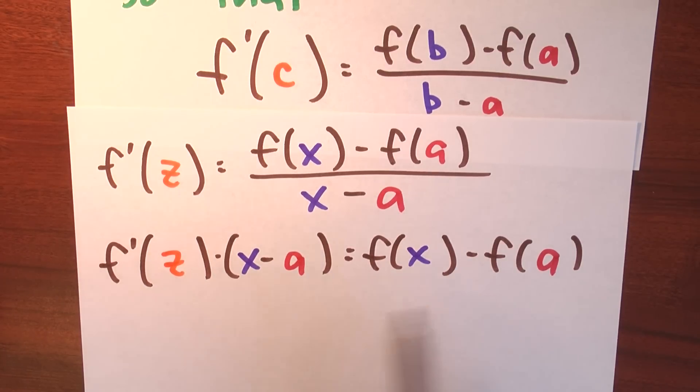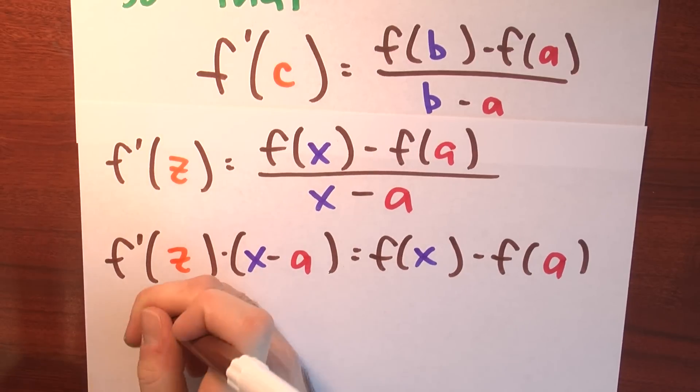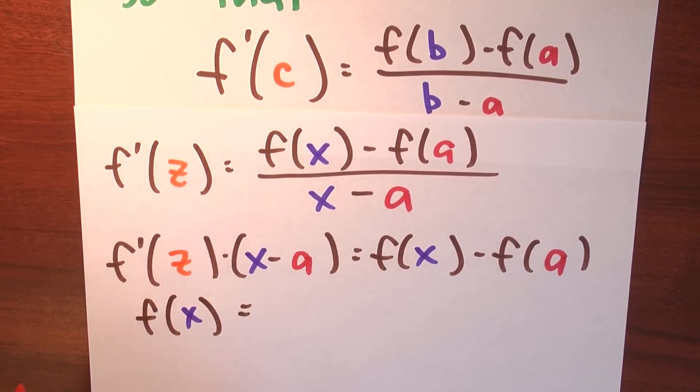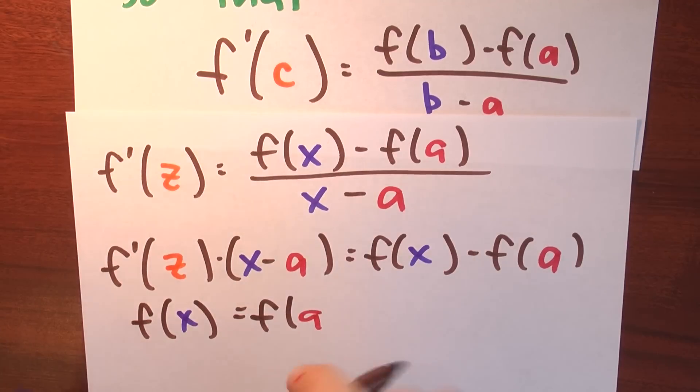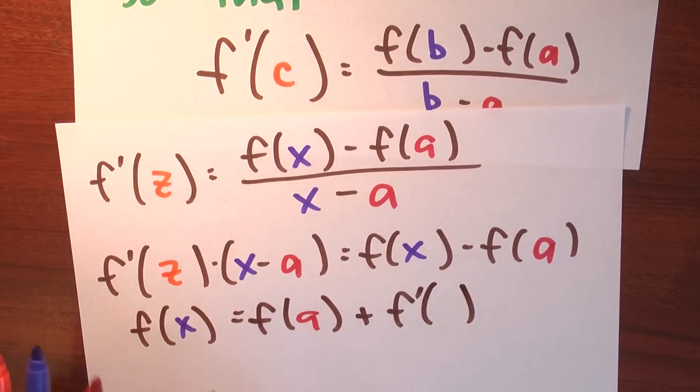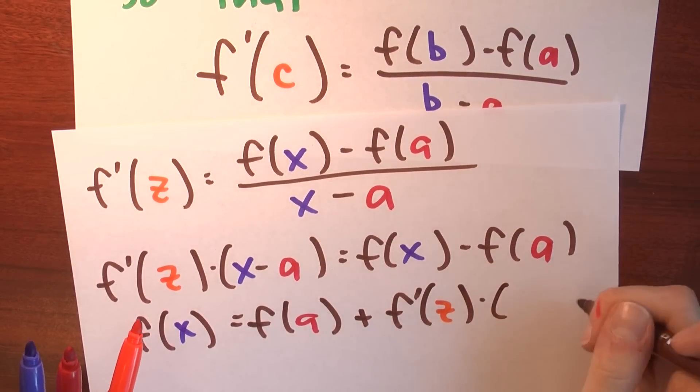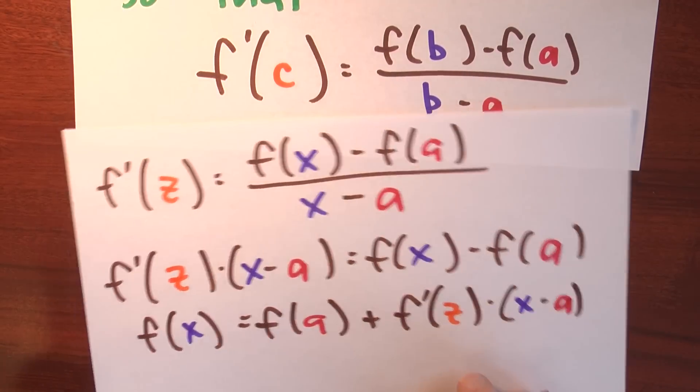And I'm going to add f of a to both sides. And I'm going to start with f of x on this side. So I'm just going to write this, f of x is equal to what, f of a, f of a plus this quantity here, f prime of z times x minus a.